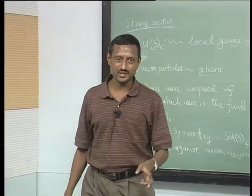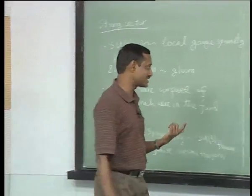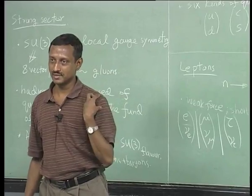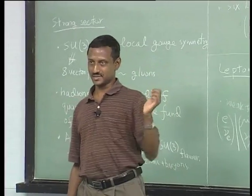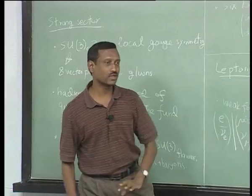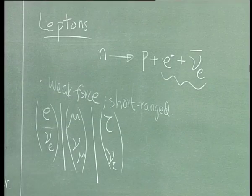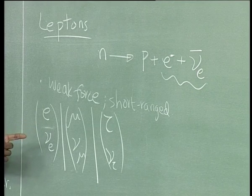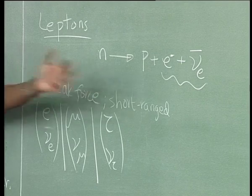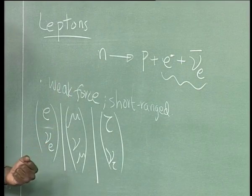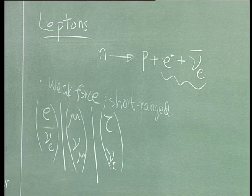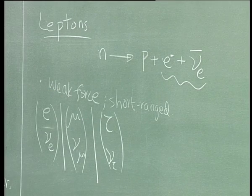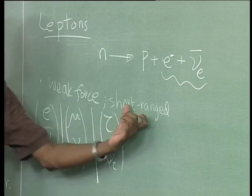Neutrinos are extremely weakly interacting — they can pass through the whole Earth without interacting with anything, making them very hard to detect. They were first detected as missing energy. The original guess was they were massless and chiral — only left-movers, no right-movers. Coming back to the point: we will see today how to understand the weak force and how these bosons become short-ranged.